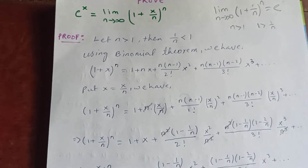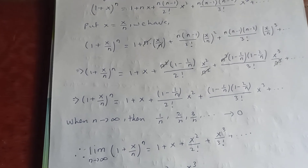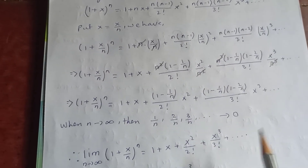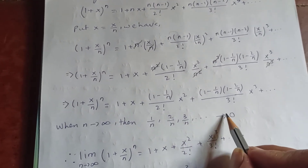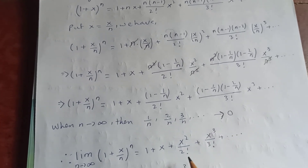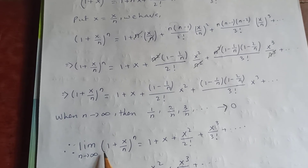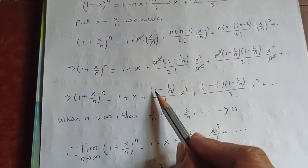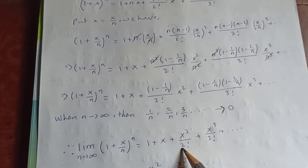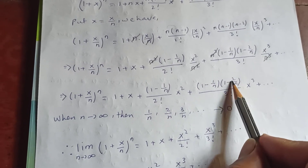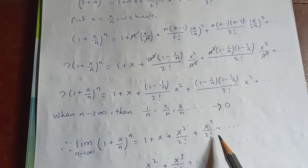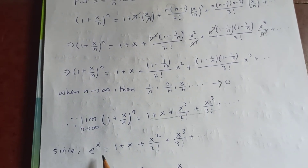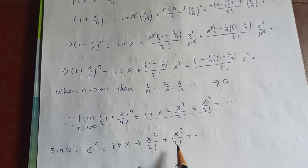Now we are going to take the limit. As n tends to infinity, 1/n, 2/n, 3/n, and so on will tend to 0 — not exactly 0, but they tend to 0. Therefore, as the limit n tends to infinity, (1 + x/n)^n becomes 1 + x + 1/2! · x² + 1/3! · x³ and so on, since (1 − 1/n) → 1, (1 − 2/n) → 1, and so on. So what is this series?